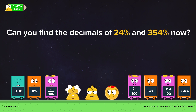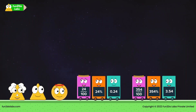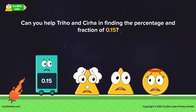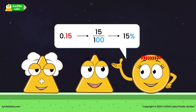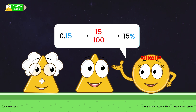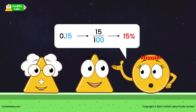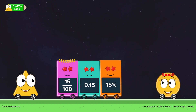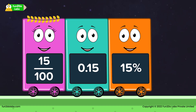Can you find the decimals of twenty-four percent and three-hundred and fifty-four percent? More siblings are found — hooray! This is brilliant! Fractions, decimals, and percentages are so related. Now, zero point one five has two digits after the decimal point, meaning it is fifteen by hundred, which is equal to fifteen percent. Zero point one five is happy to find his percentage and fraction siblings.